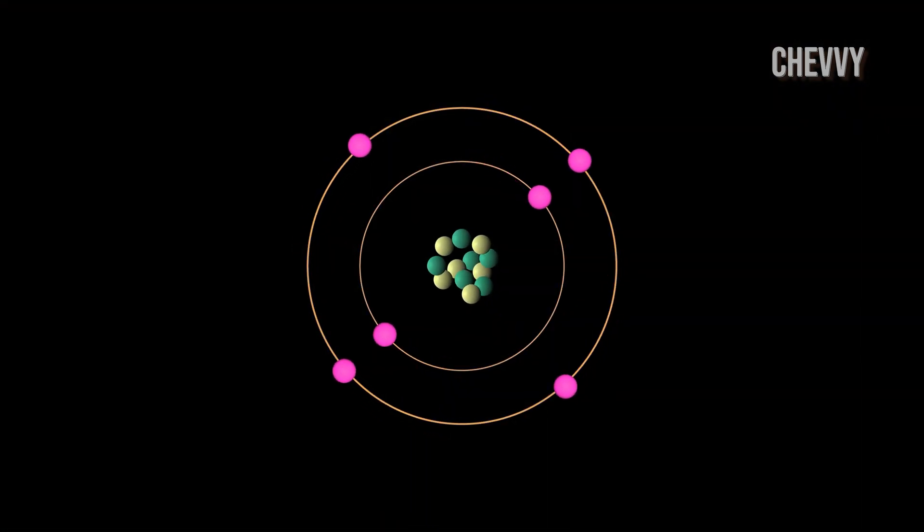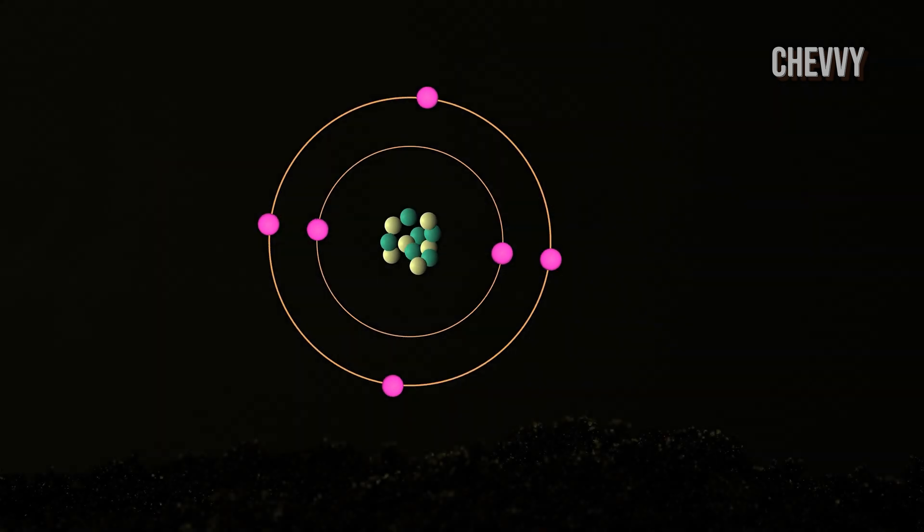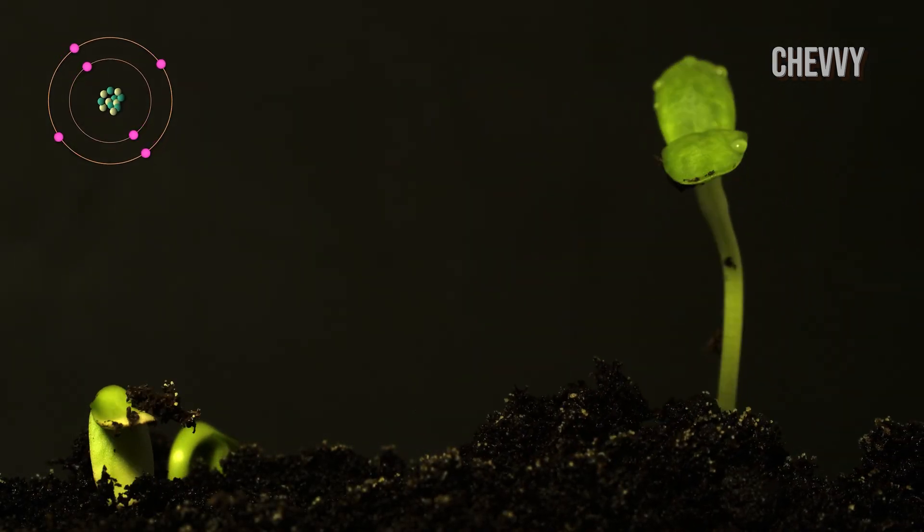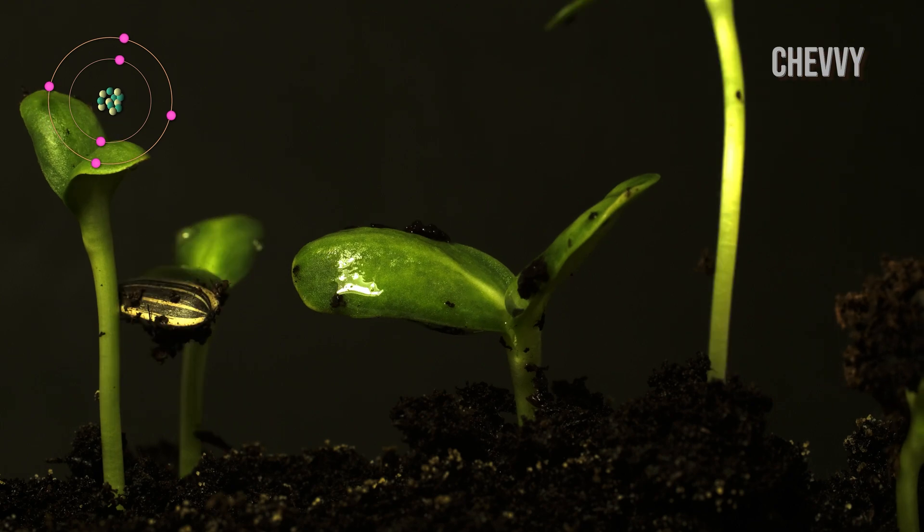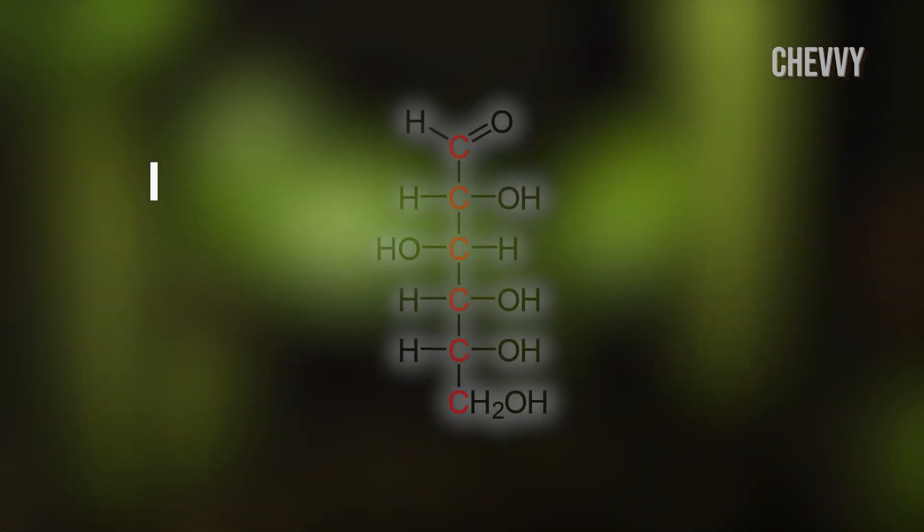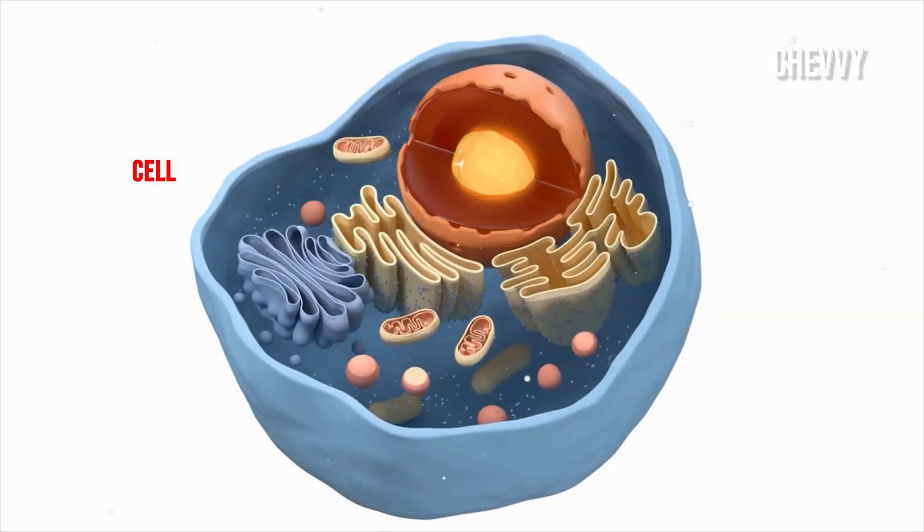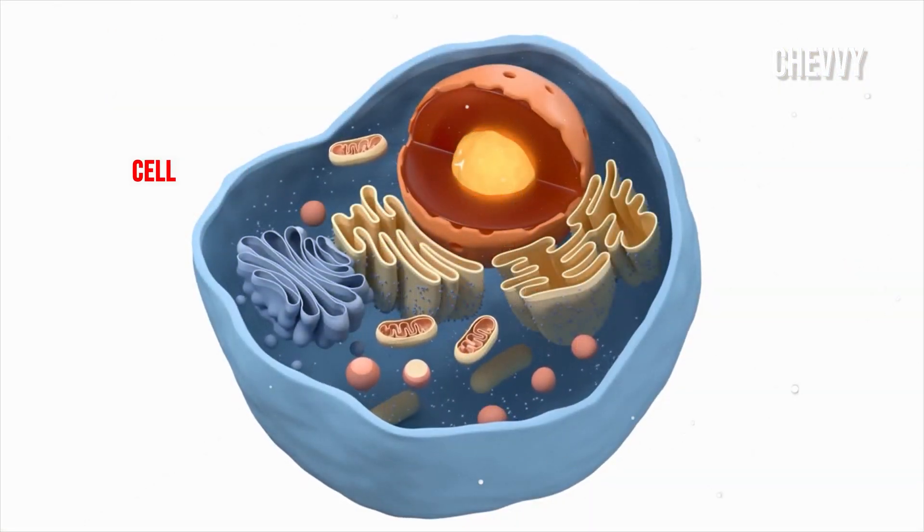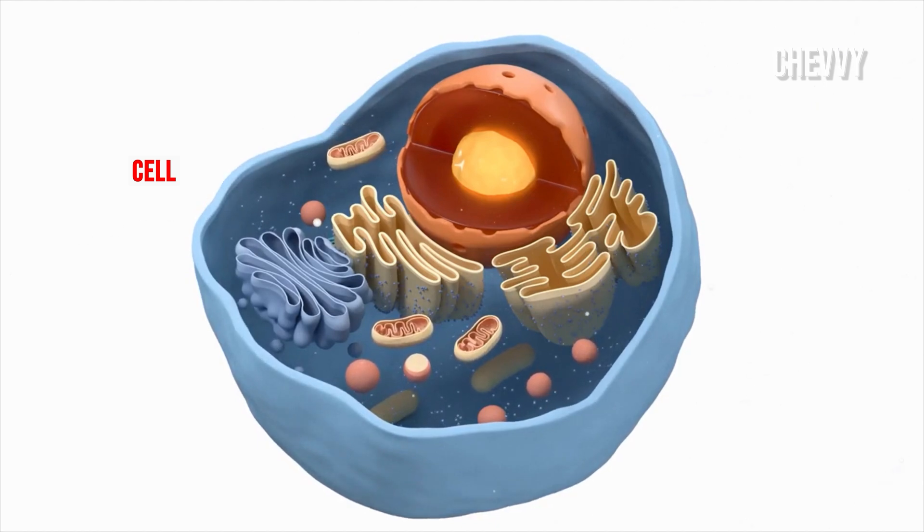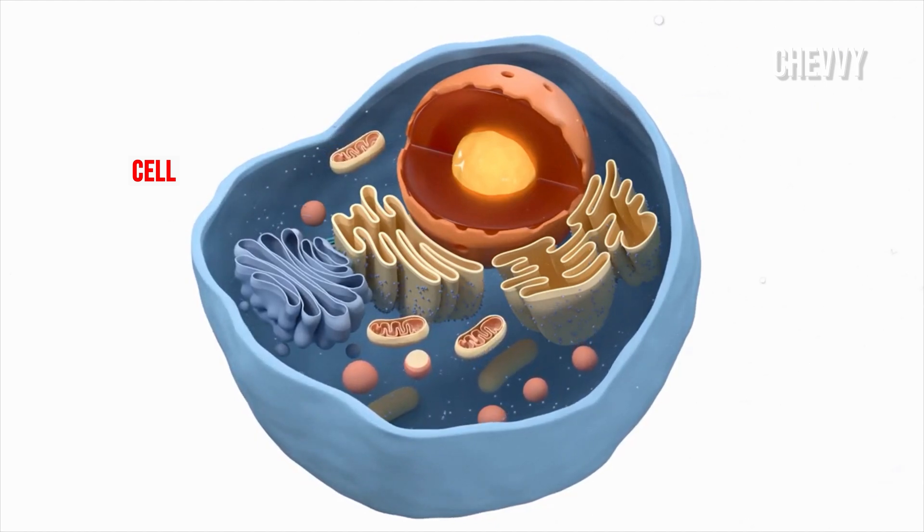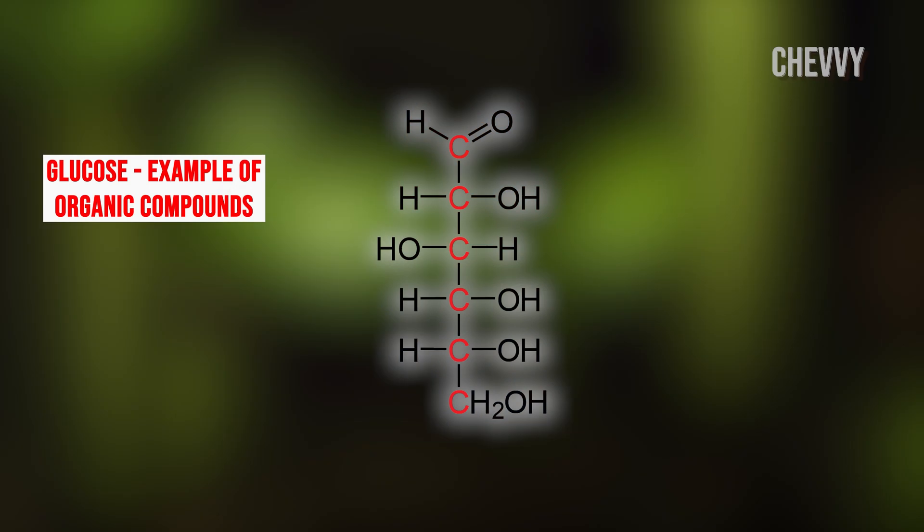Carbon is the most important element to life. Without this element, life as we know it would not exist. A compound found mainly in living things is known as an organic compound. Organic compounds make up the cells and other structures of organisms and carry out life processes. Carbon is the main element in organic compounds, so carbon is essential to life on earth.